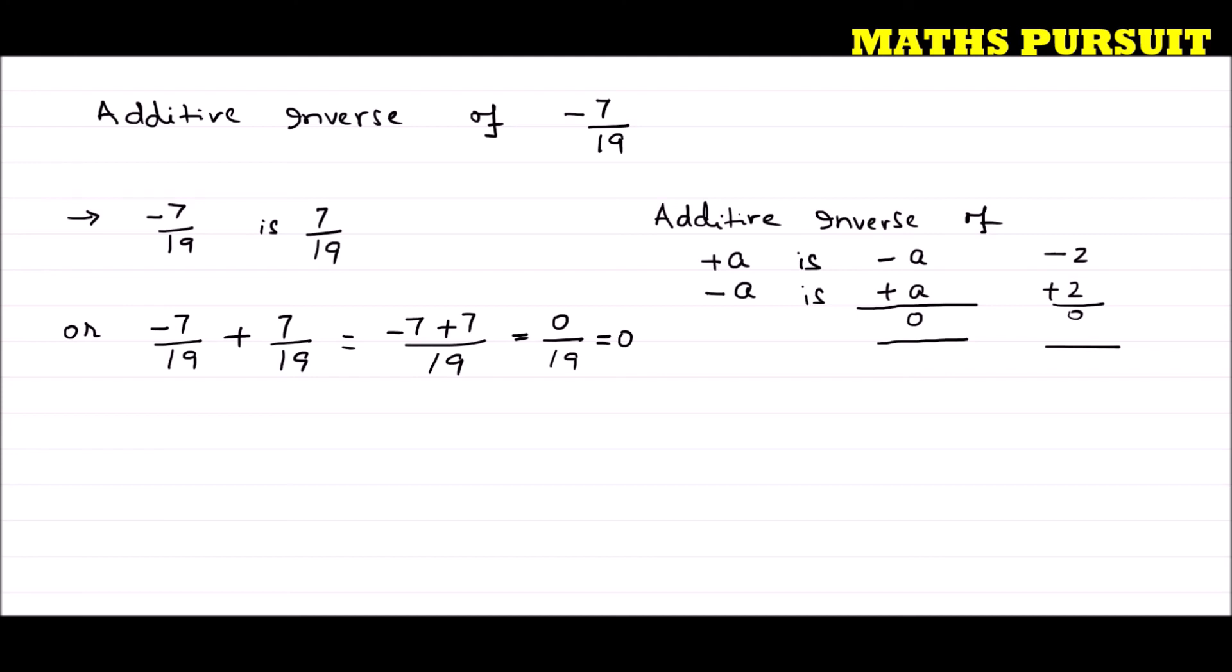So the additive inverse of minus 7 by 19 is plus 7 by 19, and if we add both of them we get 0. So the number we have considered for additive inverse is correct. Hope you understood this.